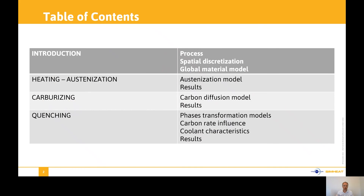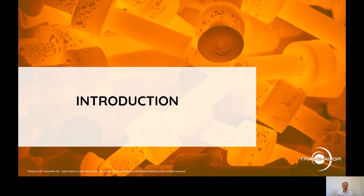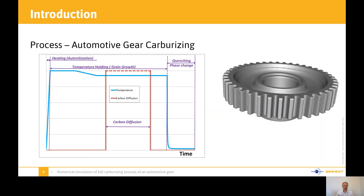I'm going to go through the full process and then discuss the results. First let's introduce this concept or process. This is a typical carburizing process. It starts with a heating or austenization, then we hold the temperature and scale down a little bit where the carbon diffusion happens. Then after this carbon diffusion stage we go to the quenching where we have phase transformation and we basically define the final properties of the part. The part we are going to look into is just an automotive gear.